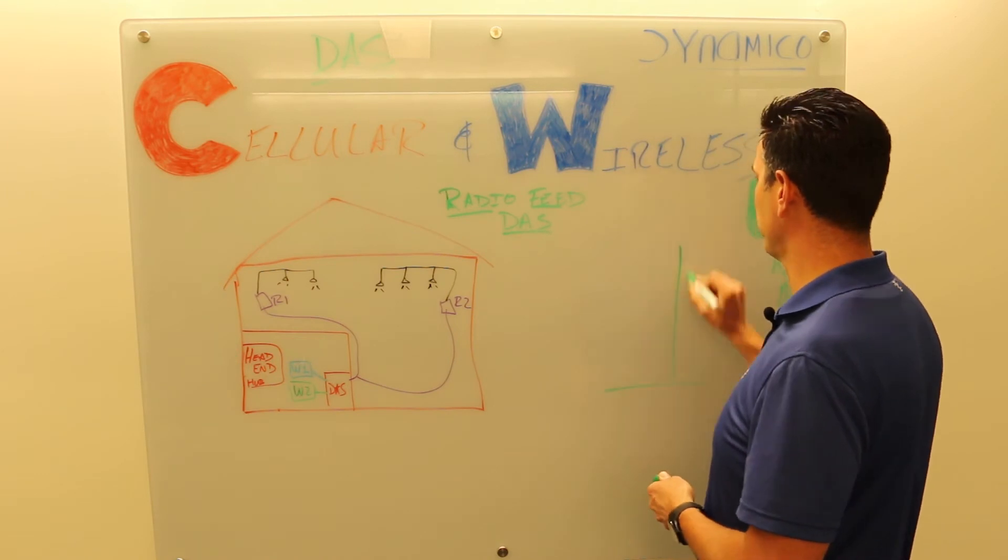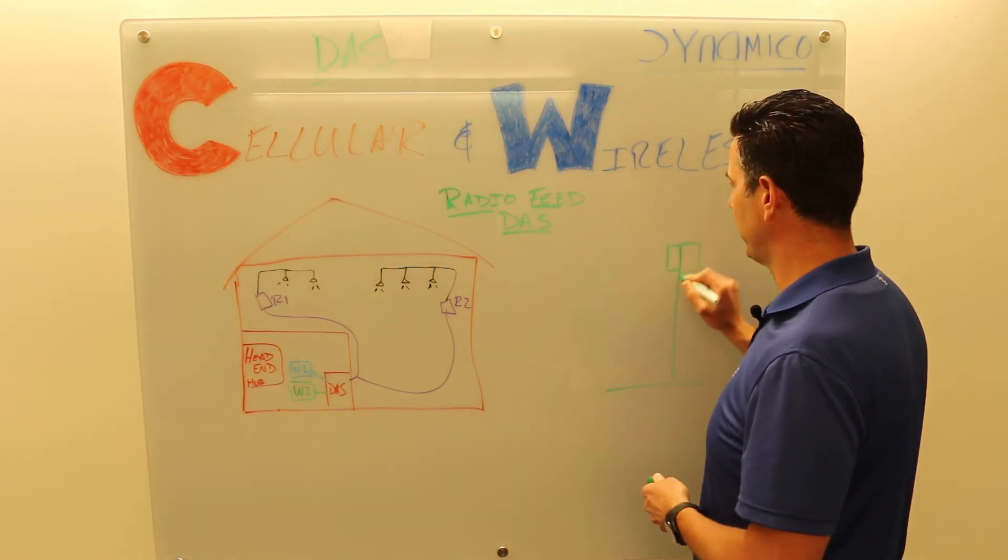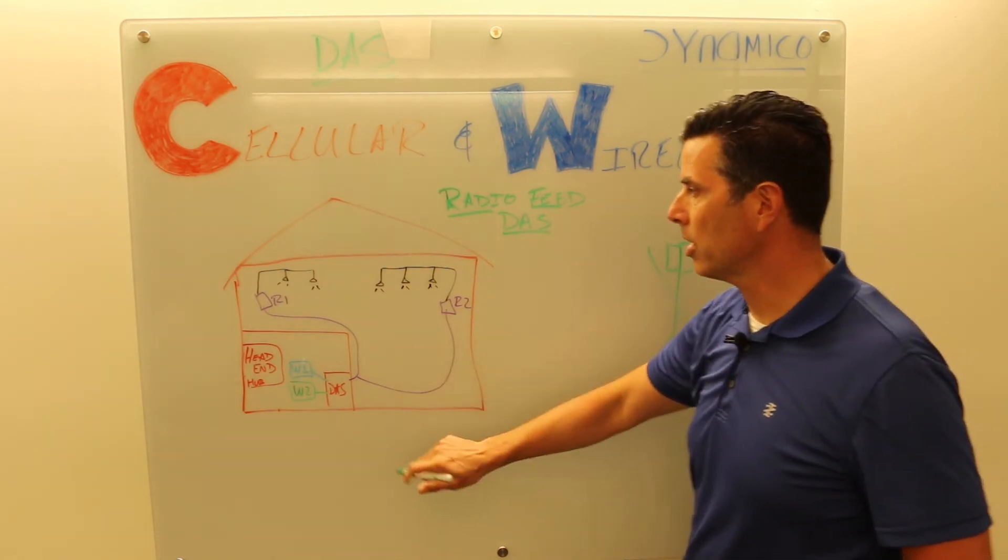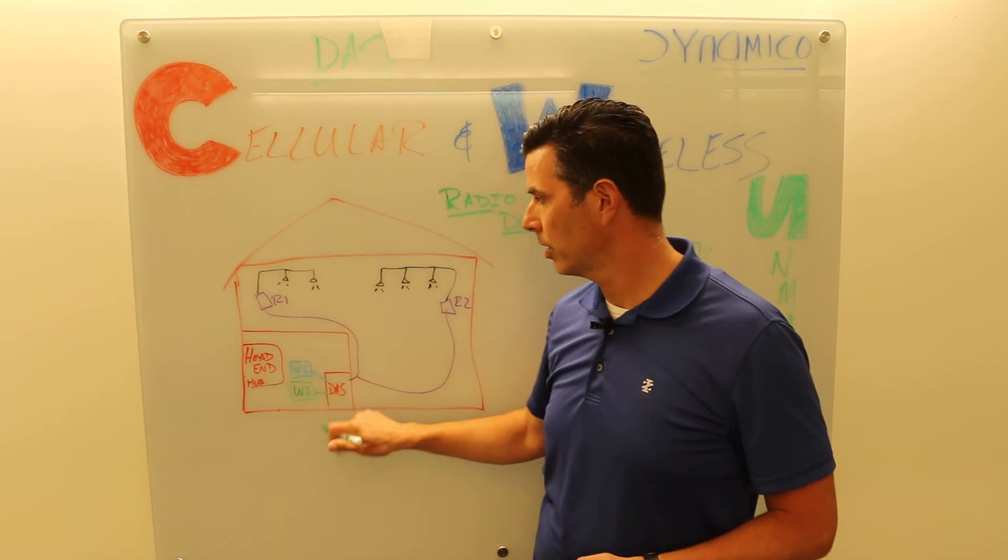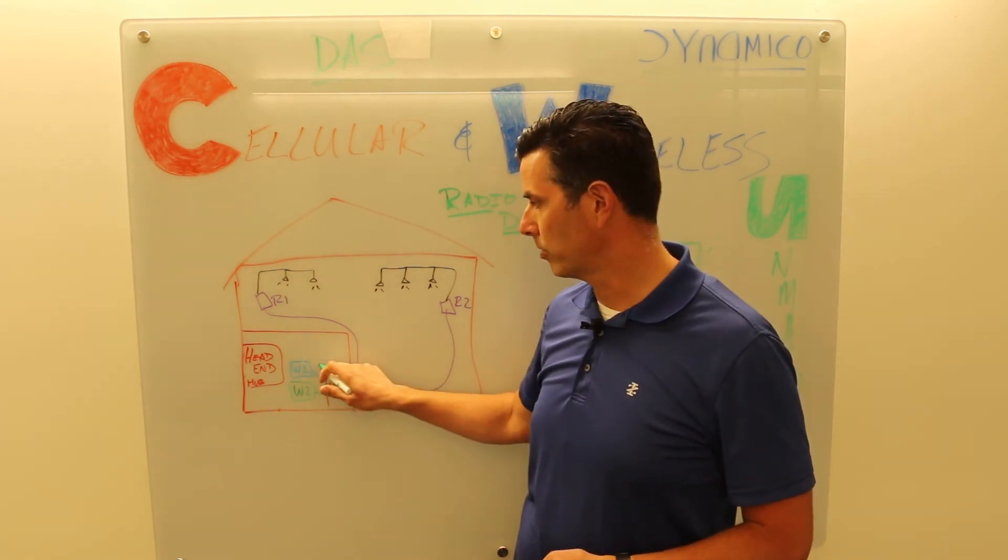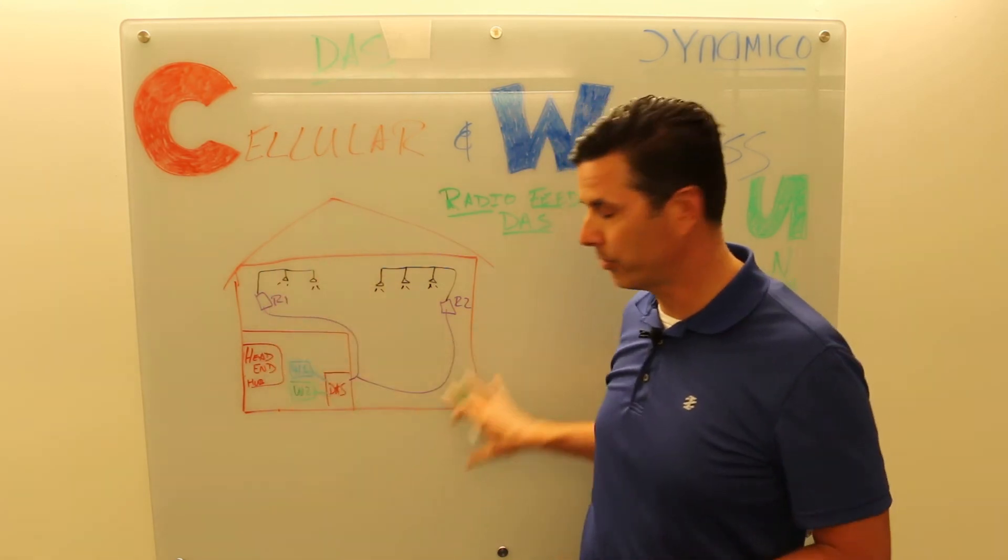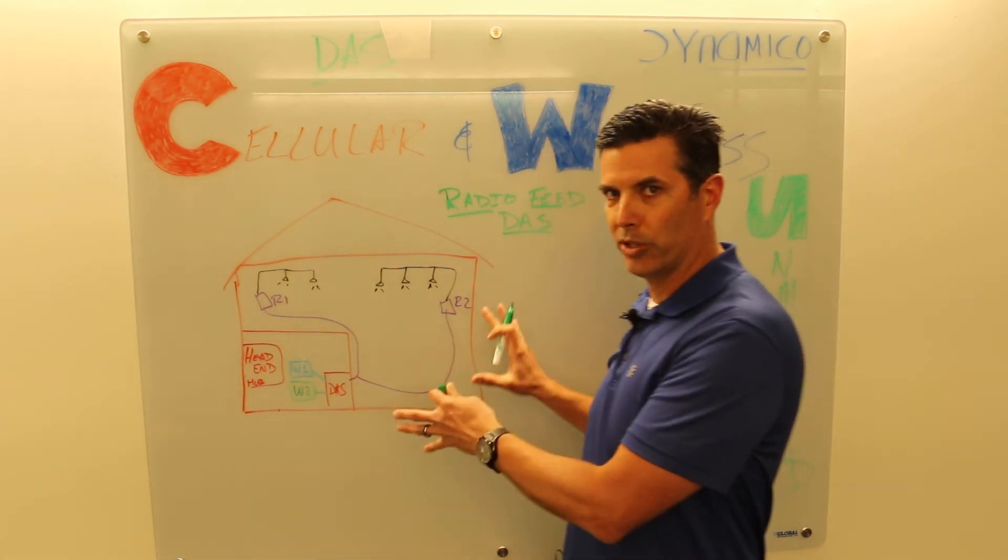They'll put in macro equipment, radio, small cell equipment that will feed the DAS, the distributed antenna system. It does not use your cell towers. You've got your cell tower network out here and it does not use this at all. Instead of this radio gear feeding this building, you have donated radios from the wireless operators: wireless operator one, wireless operator two. This is a two operator diagram I've drawn for you here.